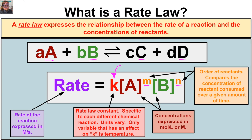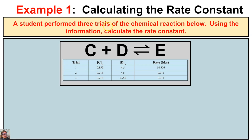In this first example, a student performed three trials of the chemical reaction below. Using the information, calculate the rate constant. We have a chemical reaction where C plus D produces E. The students performed this experiment in three different trials, recording the concentrations of C and D used, and the rate of the chemical reaction determined during each trial. We know that rate equals K times the concentration of C raised to the power M, times the concentration of D raised to the power N.